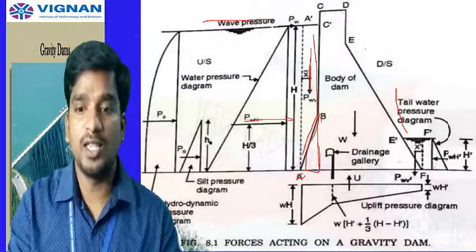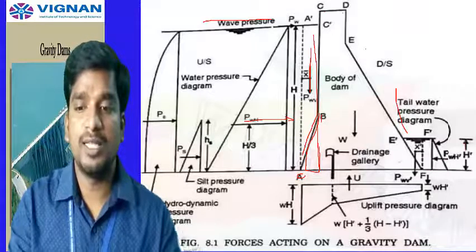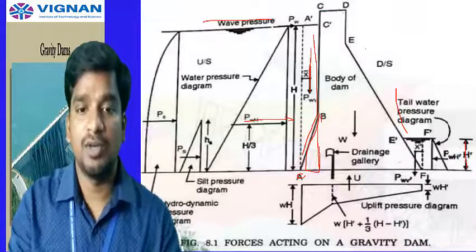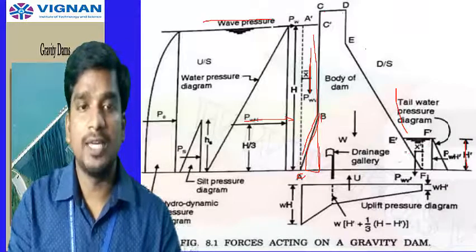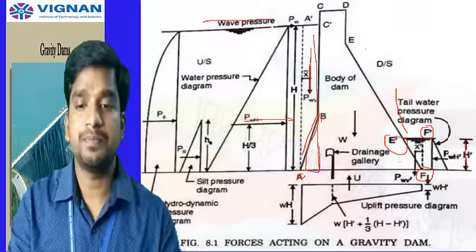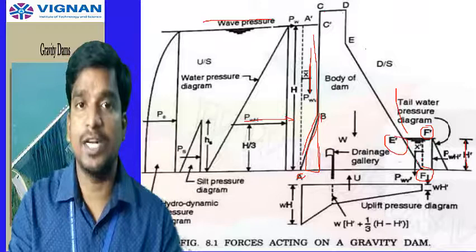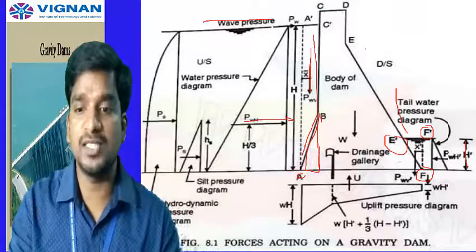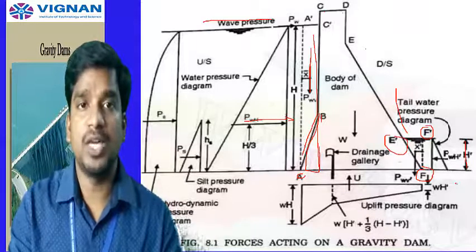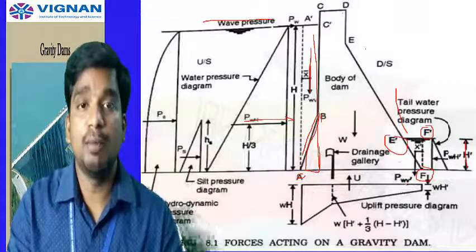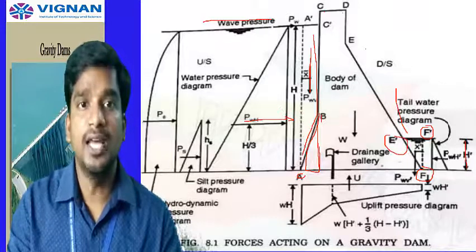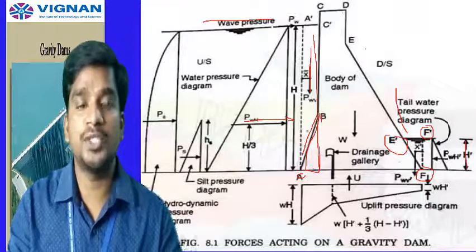On the downstream side, there is also a tail water level at some elevation, considered with height H prime. The downstream water pressure is similarly split into two components: PWH prime — the horizontal component — and PWV prime — the vertical component. These represent the water pressure forces acting on the downstream tail water side of the dam.